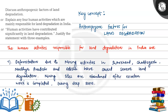Let's see this question. This question says: discuss anthropogenic factors of land degradation, or explain any four human activities which are mainly responsible for land degradation in India, or human activities have contributed significantly in land degradation — justify the statement with three examples. In this question, we have asked about which four human activities are responsible for land degradation, and what are the anthropogenic factors of land degradation. So the key concept of the question is anthropogenic factors of land degradation.